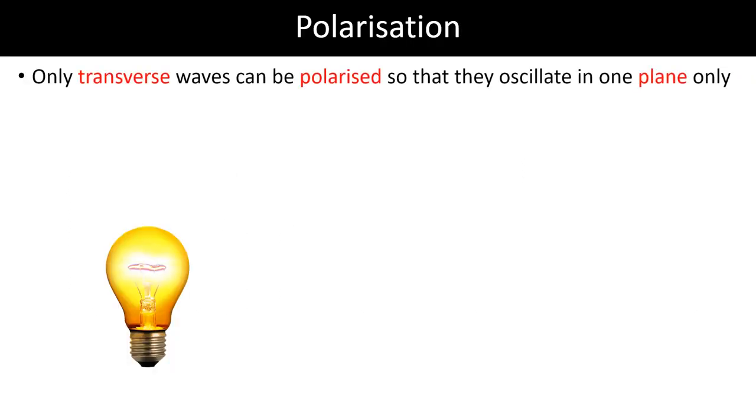Polarization can only occur in transverse waves. The light that is given off in a transverse wave, which moves like so, the energy goes away from the light bulb, but the waves oscillate perpendicular to the direction of energy transfer. That's what makes a transverse wave.